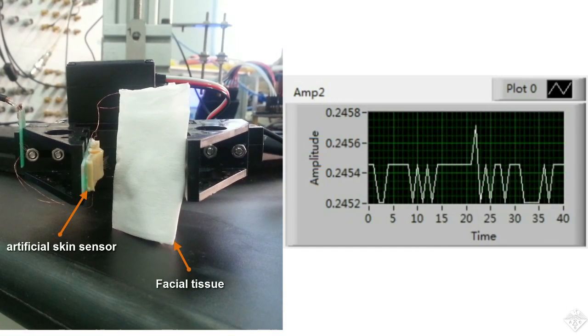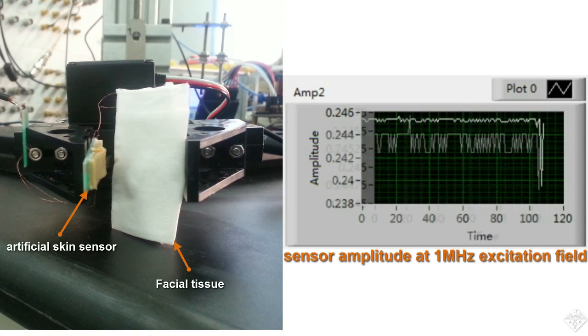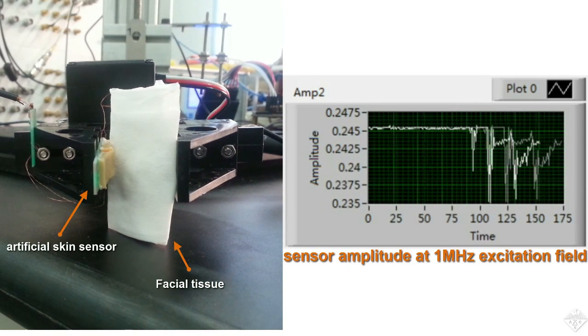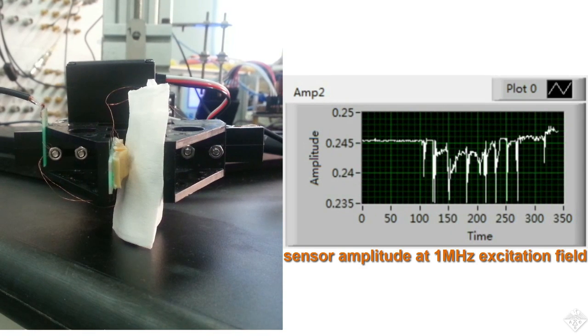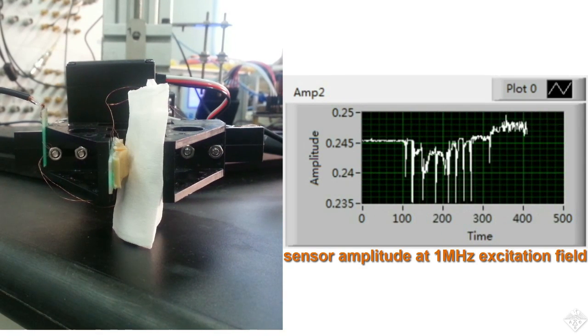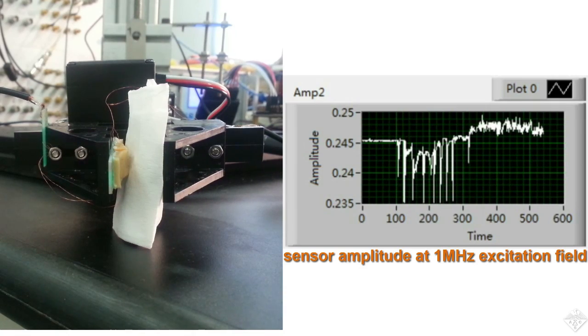Here you see a robot gripper equipped with a new sensor feeling the slight forces exerted on it by a tissue. This level of sensitivity means that a robot holding something could feel it slipping from its grasp and grab on a little tighter – an ability that could enable future robots or prosthetics to handle delicate tasks currently out of their reach.